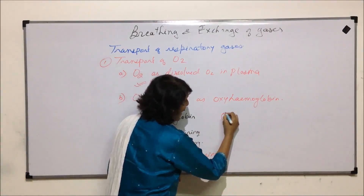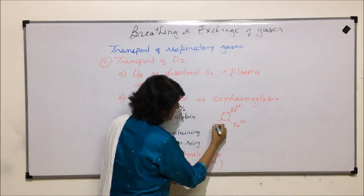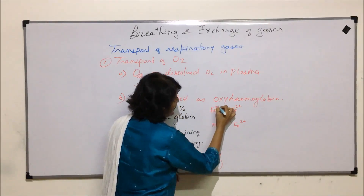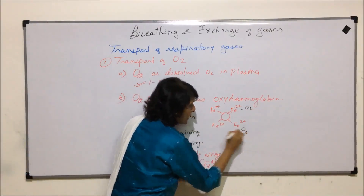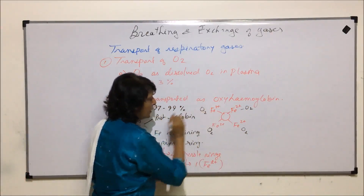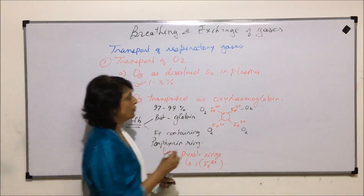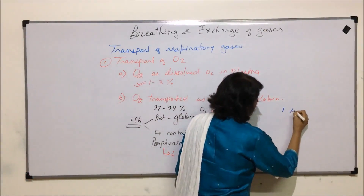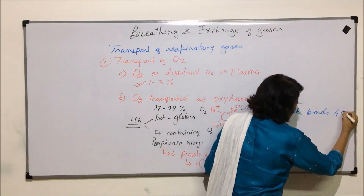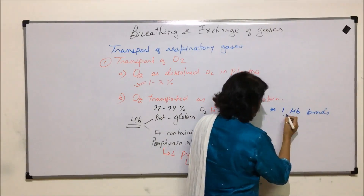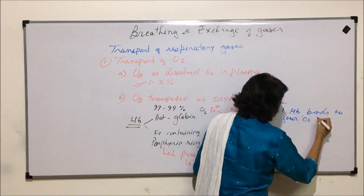Since the porphyrin ring has four ferrous ions, it is capable of binding to four oxygen molecules — one oxygen here, second here, third here, and fourth here. So one hemoglobin molecule binds to four oxygen molecules. One hemoglobin can carry four oxygen molecules.